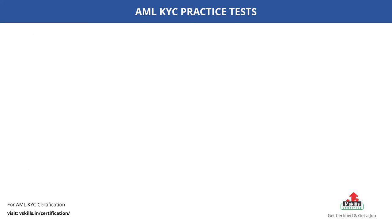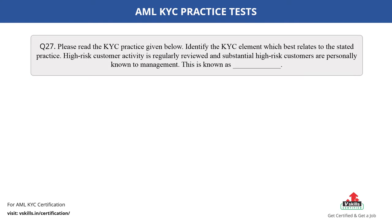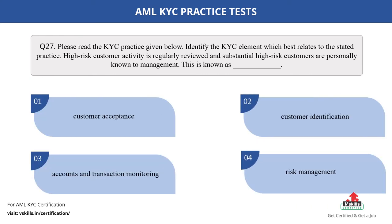Question number 27. Please read the KYC practice given below. Identify the KYC element which best relates to the stated practice. High-risk customer activity is regularly reviewed and substantial high-risk customers are personally known to management. This is known as dash. Fill in the blank. The options are: A. Customer acceptance; B. Customer identification; C. Accounts and transaction monitoring; D. Risk management. The correct answer is option C.